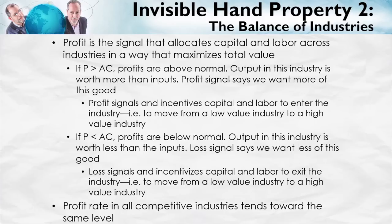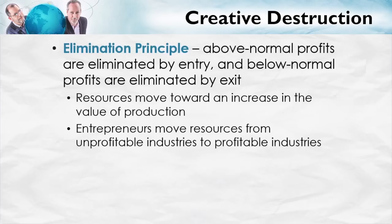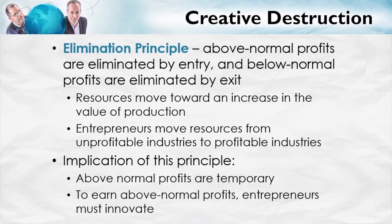If profit were higher in one industry than another, that says the output of that industry is worth more — therefore we should have more of that good, and that's exactly what the entry signal does. The same is true for exit. Resources are always tending to move toward an increase in the value of production, and entrepreneurs are key here — it's entrepreneurs who move resources from unprofitable industries toward profitable ones. Another implication is that above-normal profits are always temporary. To earn above-normal profits, you've got to do something different — you have to innovate. Joseph Schumpeter, the great Austrian economist, was very eloquent on the importance of innovation in a capitalist economy.